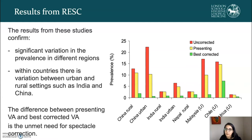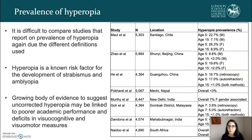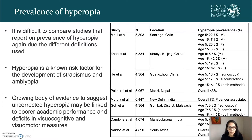On this graph, you can see that the difference between presenting visual acuity and best corrected visual acuity represents the unmet need for spectacle correction. It is difficult to compare studies reporting hyperopia prevalence due to different definitions used, though the RESC studies attempted to use the same definitions throughout. Hyperopia is a known risk factor for the development of strabismus and amblyopia, and there is also a growing body of evidence suggesting uncorrected hyperopia may be linked to poor academic performance and deficits in visual, cognitive, and visual-motor measures.